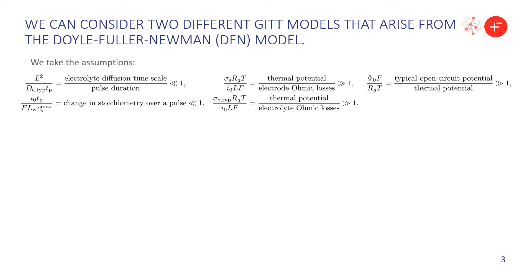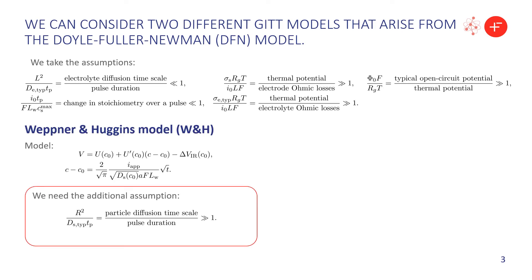We take the following assumptions: the pulse duration is longer than the electrolyte diffusion timescale so the electrolyte is at steady state; the ohmic losses in the electron and electrolyte are smaller than the thermal potential; the open circuit potential is much larger than the thermal potential; and finally, the change in stoichiometry over a single pulse is small. With all these assumptions, we can perform the asymptotic analysis and find that the Weppner and Huggins model is one outcome if we additionally assume that the particle diffusion timescale is larger than the pulse duration. That assumption allows us to get the expression for the variation in concentration, c minus c0, that behaves like a square root of time.